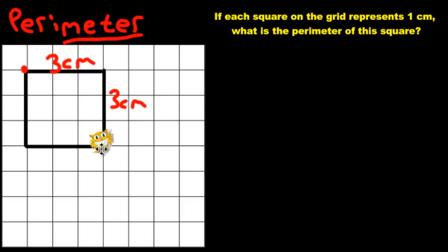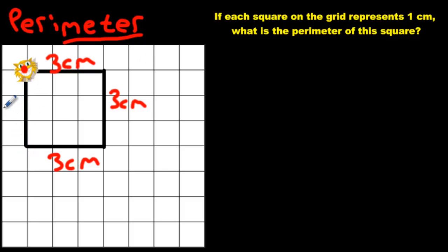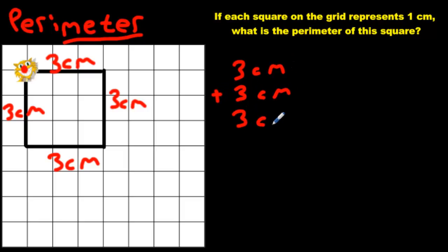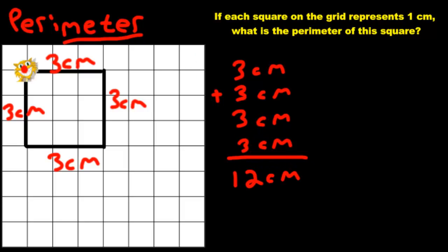Then he's going to go three to the left — meow, meow, meow. We'll put a three. And then he's going to have to go back to the top — one, two, meow — and he ends up where he started: three centimeters. We want to find out how far he went. So he went three centimeters plus three centimeters plus another three plus another three. So three and three is six, and another three is nine, and another three is 12 centimeters. And that's the perimeter of that shape.